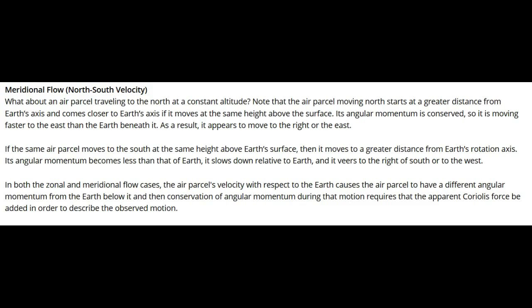The explanation for the meridional flow is simpler. An air parcel initially has the angular momentum of the Earth at its latitude. If it moves north at the same height, then it has more angular momentum than the Earth below it, and so it goes faster than the Earth and appears to move to the right.